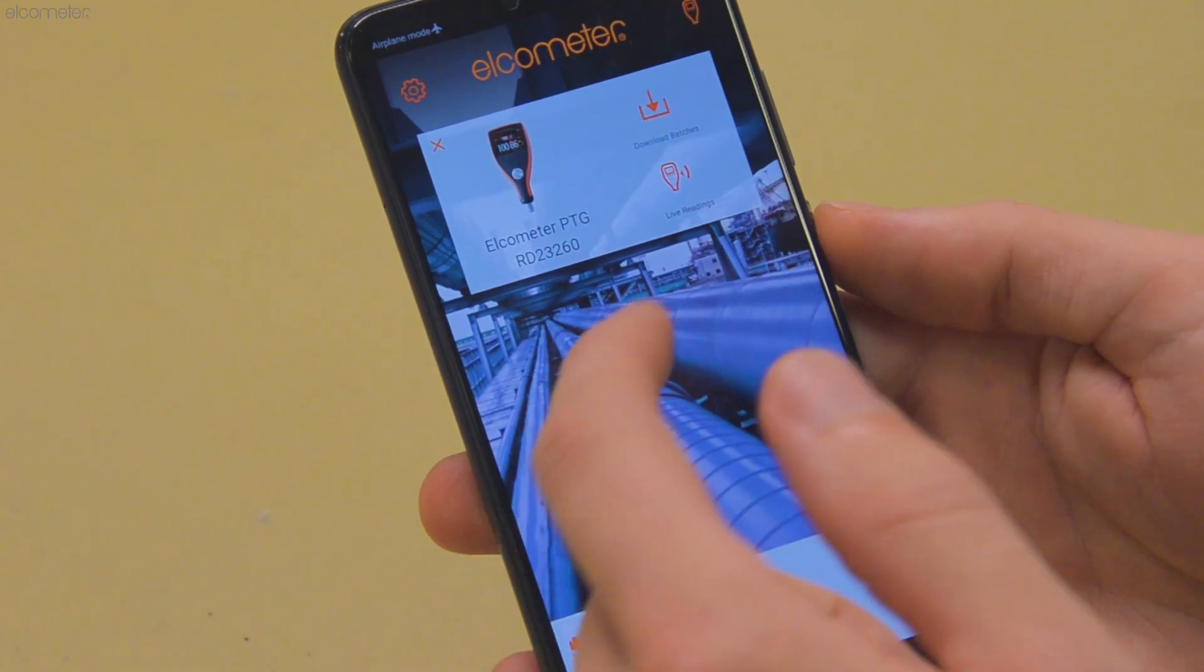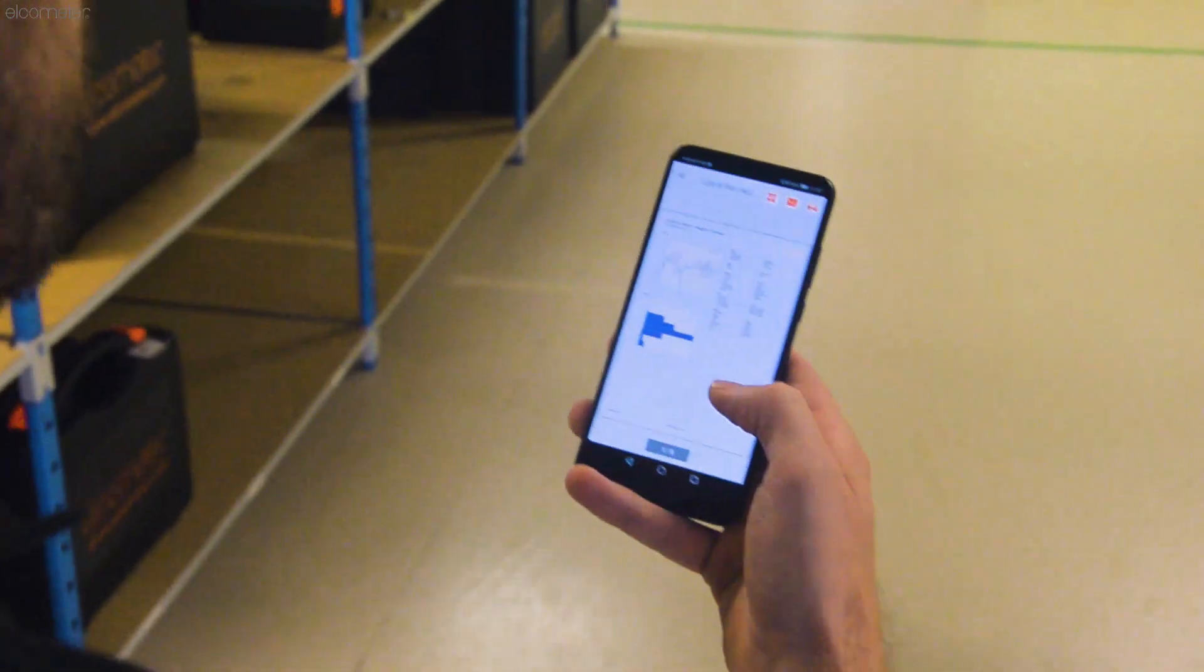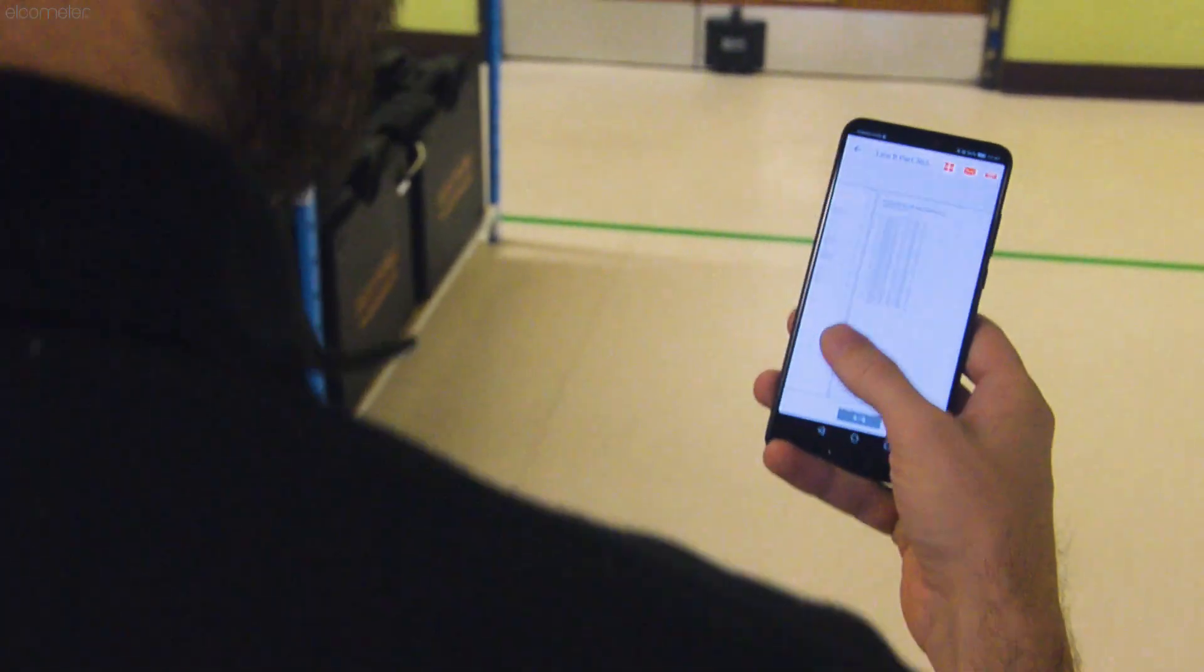Alternatively, use Bluetooth to connect your Android or Apple mobile device and use the ElcoMaster app to generate professional inspection reports instantly, wherever you are.